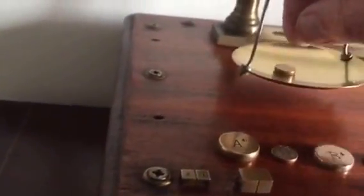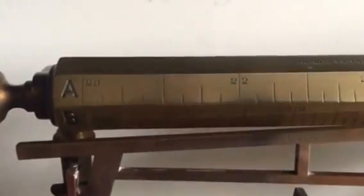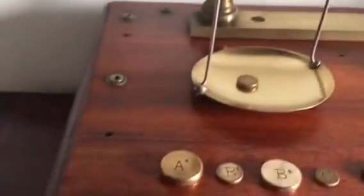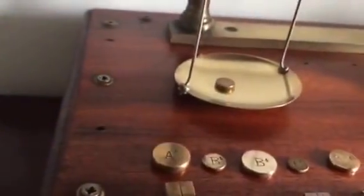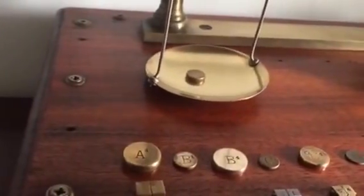We'll start with the A range, so we'll put the A weight onto the pan, make sure we have the A range selected. Now we have to take the rider which is the small weight and we place that onto the bar at the top.